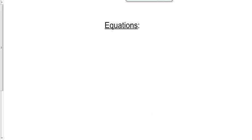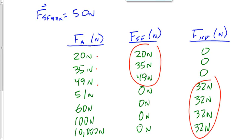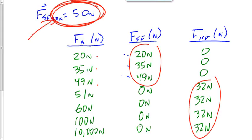How do we get those values — the 32 newtons for kinetic friction or the 50 newtons for the maximum value of static friction? We're going to see two new equations today. The first one, with a lot of subscripts: FSF max — the force of static friction maximum. This equation does not find the 20, 35, or 49 newton values. It finds the 50 newton maximum force of static friction.